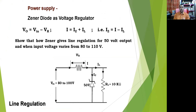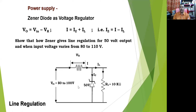The Zener diode is to be used in reverse bias. In the circuit, I have given an input DC voltage which is the unregulated one, varying from 80 volt to 100 volt. It is connected to a Zener diode with a voltage rating of 50 volt, meaning at those two points it is going to hold 50 volts. After that, we have a parallel load resistance of 10 kilo ohms across this Zener diode.